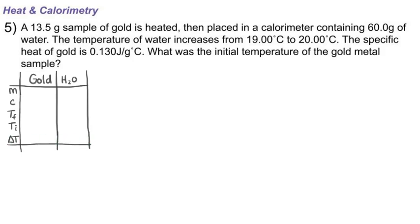Now we'll start reading through the problem and figuring out what we have. 13.5 gram sample of gold, so that would be the mass: 13.5. It's placed into a calorimeter containing 60 grams of water, so 60.0 is the mass of the water. The temperature of the water increases from 19 degrees Celsius, so that would be our initial temperature of our water: 19.00. To 20 degrees, that's our final temperature of our water: 20.00.